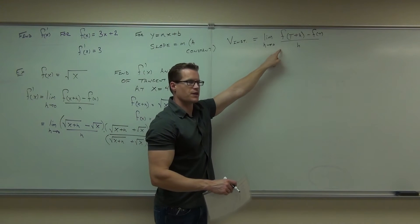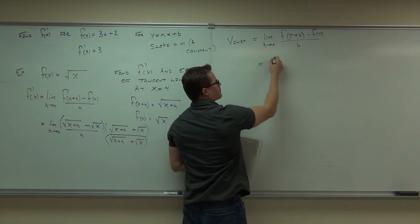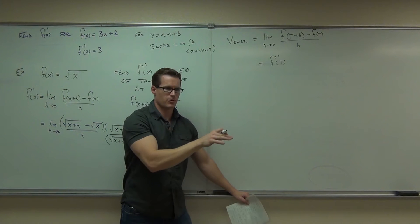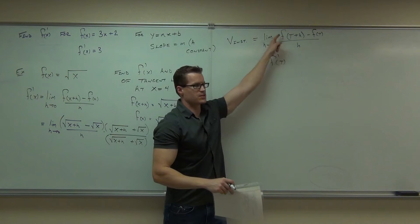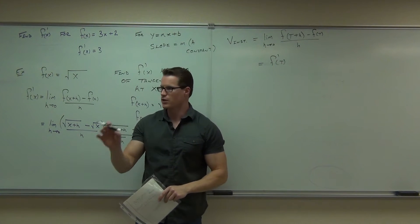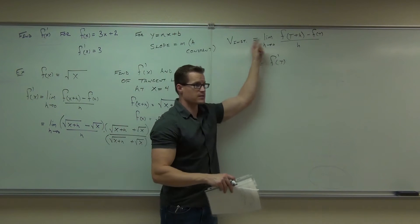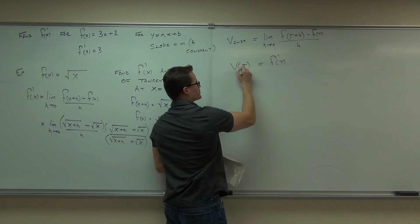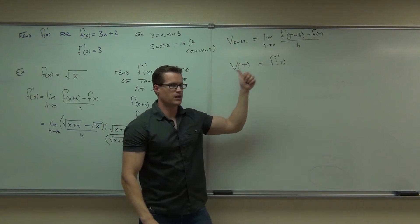If this is true, notice that all this is equal to the first derivative of your f. That's what that formula is. What that says to us is that if this gives you instantaneous velocity, and this is simply the formula for the first derivative, velocity is simply the first derivative of a position function. Now we can say it for real: instantaneous velocity, denoted v of t, is simply the first derivative of a position curve.